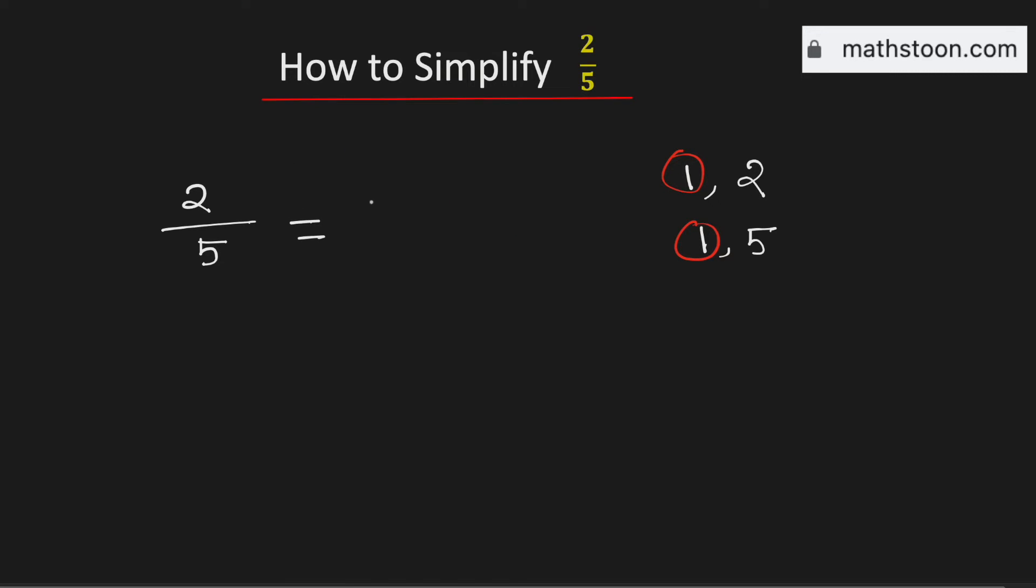Therefore to simplify it, we will divide both 2 and 5 by 1. And this will give us 2 over 5. This means the fraction 2 over 5 is already in simplified form. And this is our final answer.